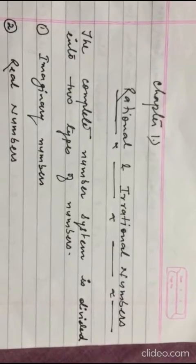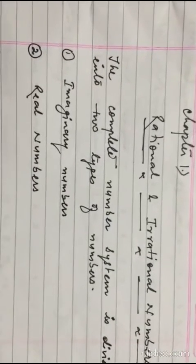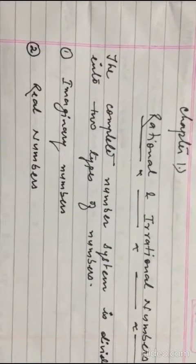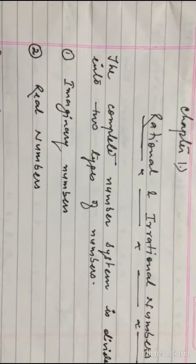Now see, the complete number system is divided into two types of numbers. The first one, imaginary number. Second one, real number.